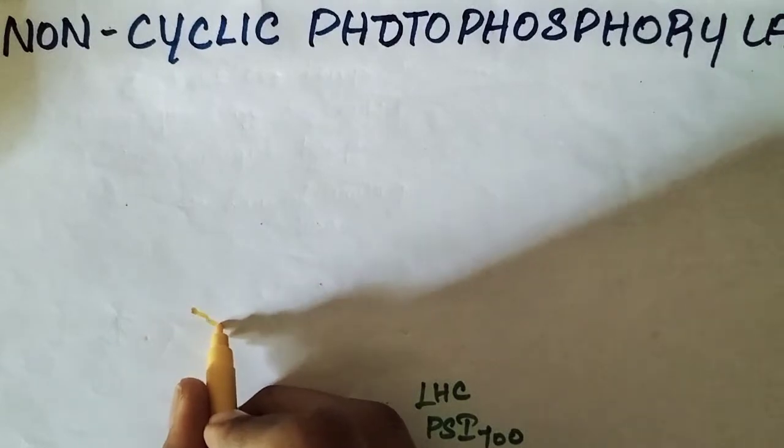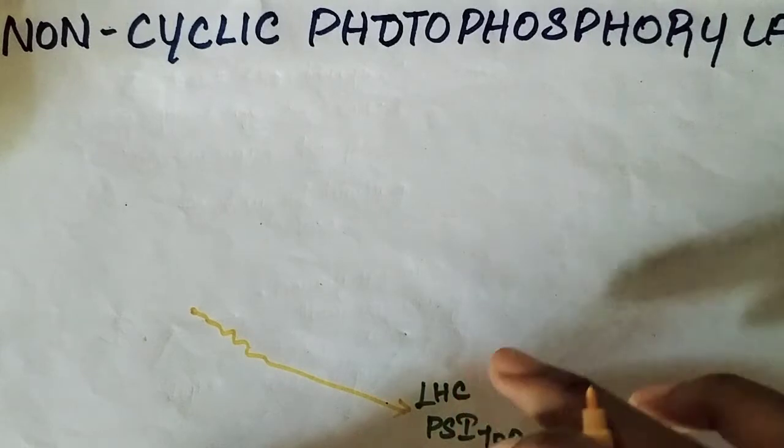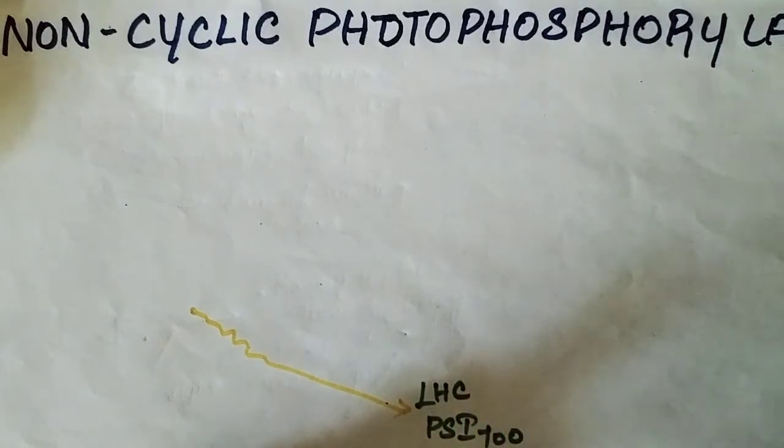First, the light harvesting complex that is PS1 — what is P700? Their reaction center is P700. When light falls on them, the components, the substances, the atoms present in them are getting excited. The electrons — their outer orbit electrons come away from their effective nuclear charge.